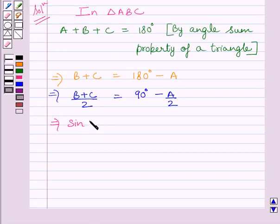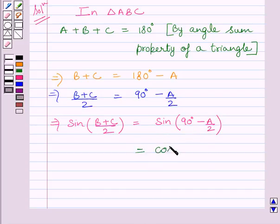So we can write sin of B plus C upon 2 is equal to sin of 90 degrees minus A upon 2. We know sin of 90 minus A upon 2 is equal to cos A upon 2.